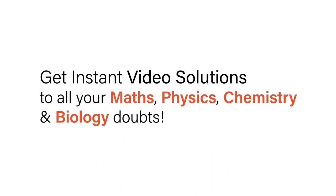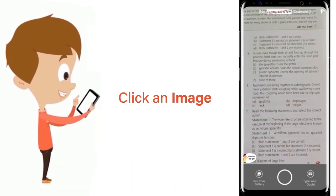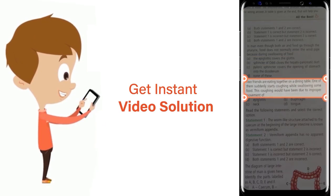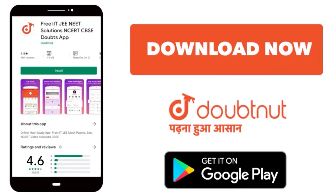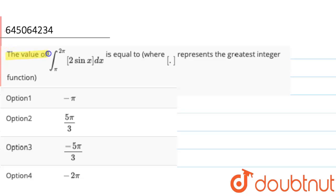With Doubtnut, get instant video solutions to all your maths, physics, chemistry and biology doubts. Just click the image of the question, crop the question, and get instant video solution. Download Doubtnut app today. The value of integration from pi to 2 pi of 2 sin x dx is equal to...